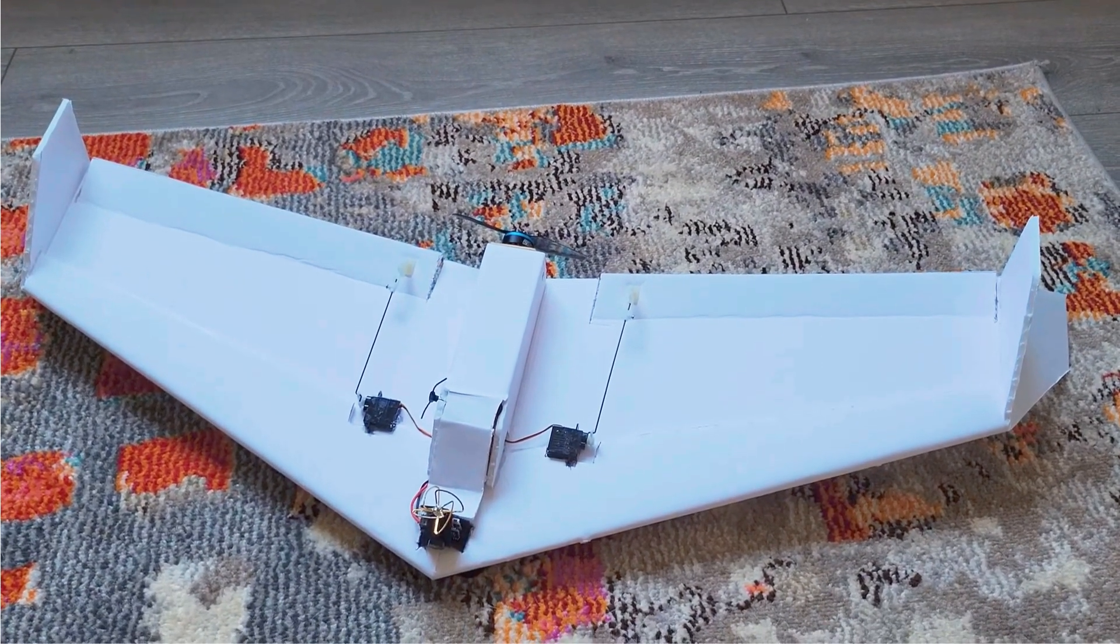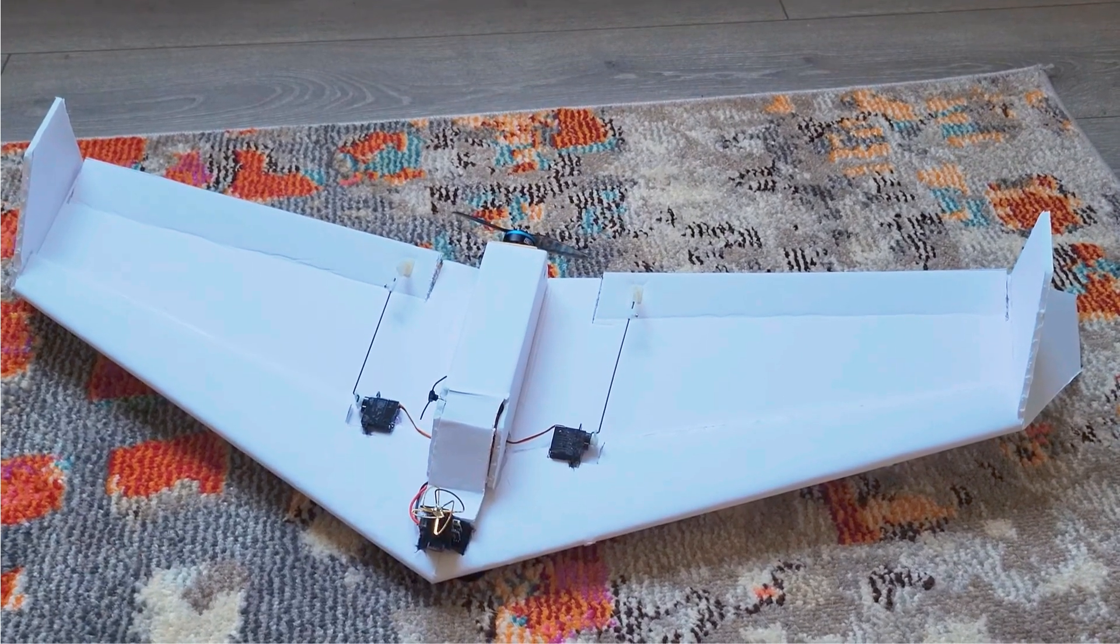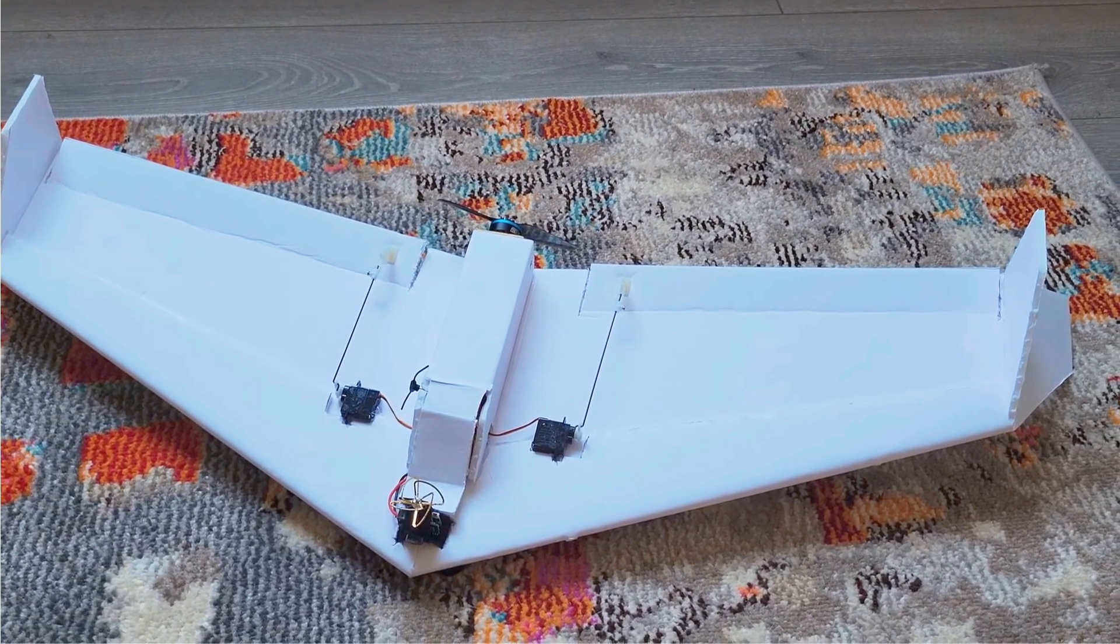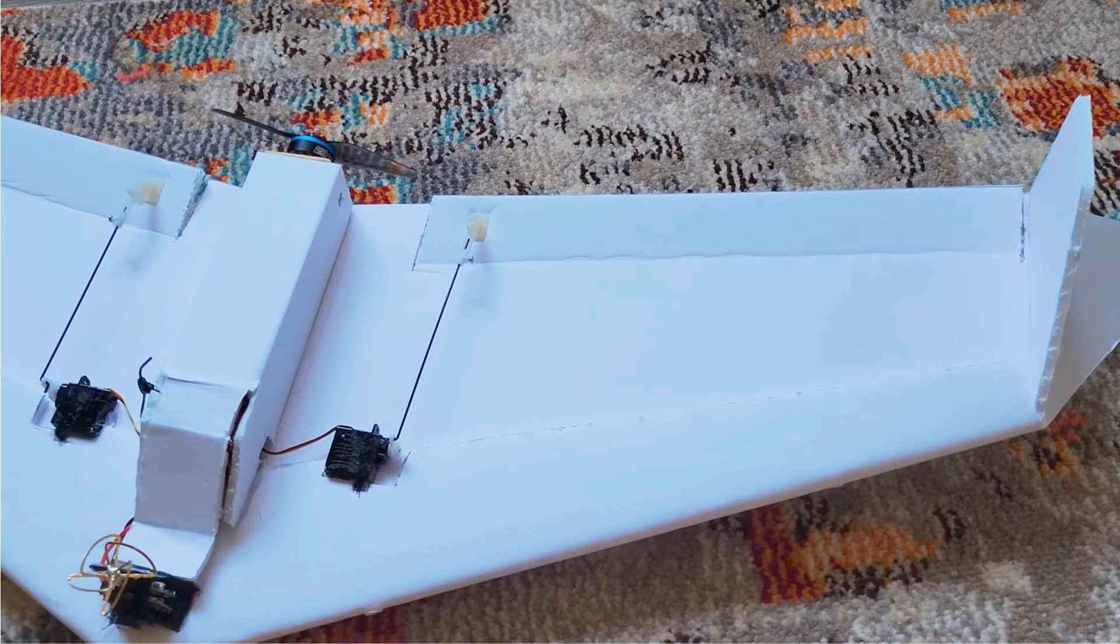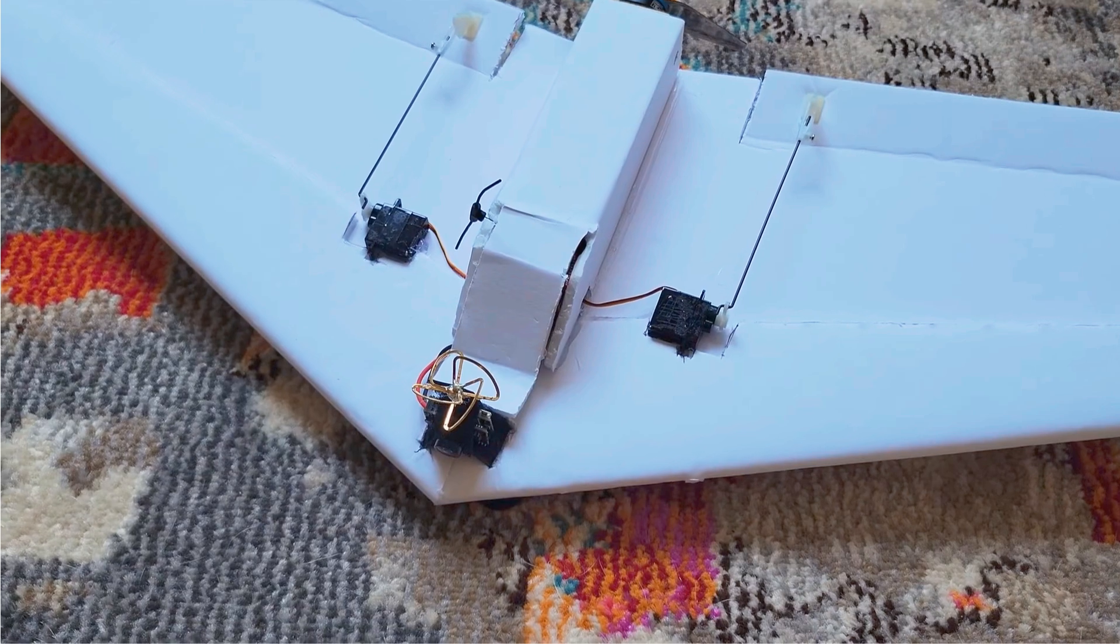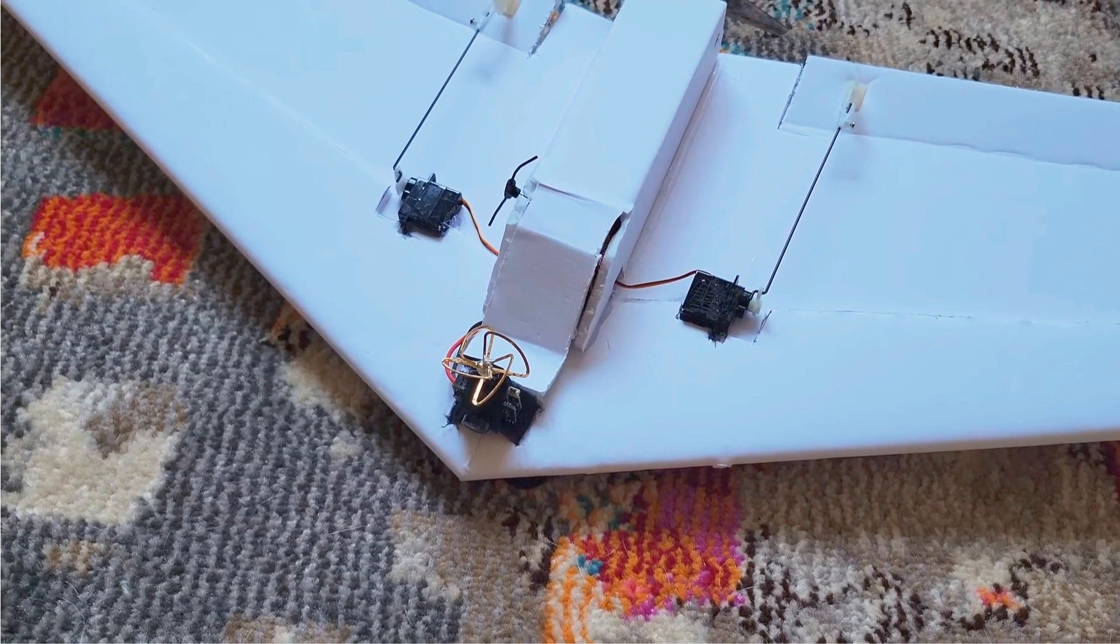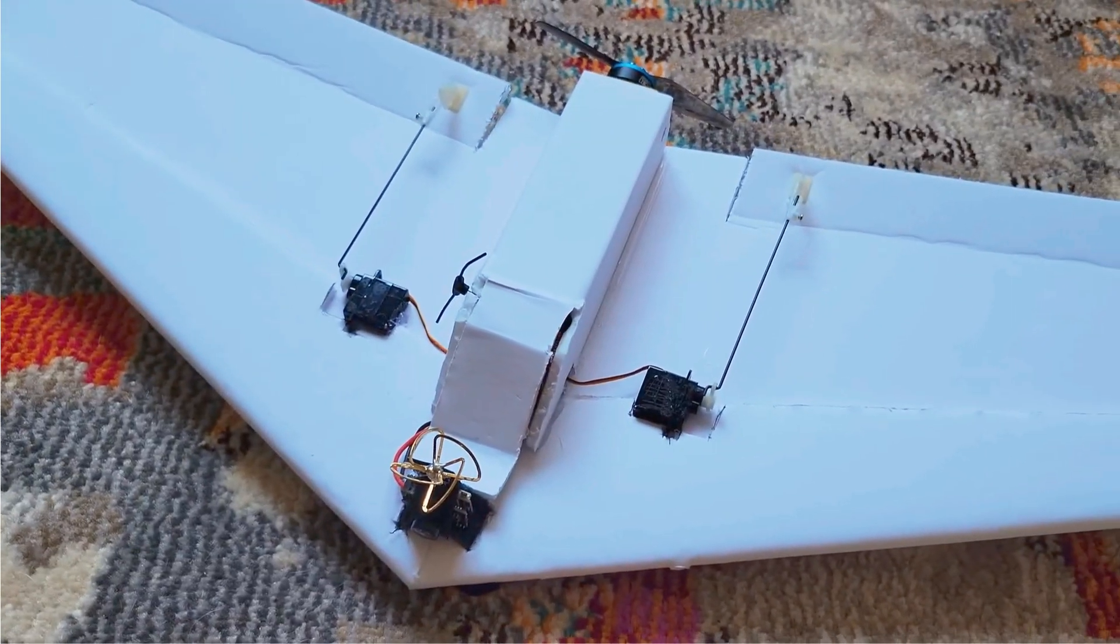So this is the version 1.3b. A little bit wider wings than 1.3a, a little bit less of a sweep degree.